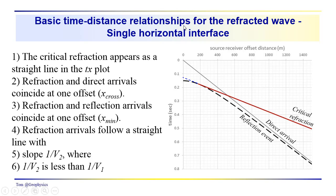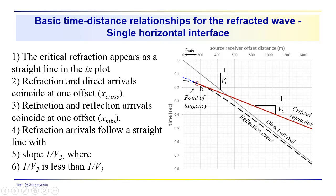We can get these basic time-distance relationships and extract information from a field data set. In summary: the critical refraction appears as a straight line in the TX or time-distance plot — also called a shot record. The refraction and direct arrivals coincide at one offset — the crossover distance. The refraction and reflection arrivals coincide at one offset — the point of tangency. The refraction arrivals follow a straight line with slope one over V2, which is less than one over V1 since V2 is greater than V1. So we get V1 and V2 from slopes, plus xmin, the crossover point, and the two intercepts.